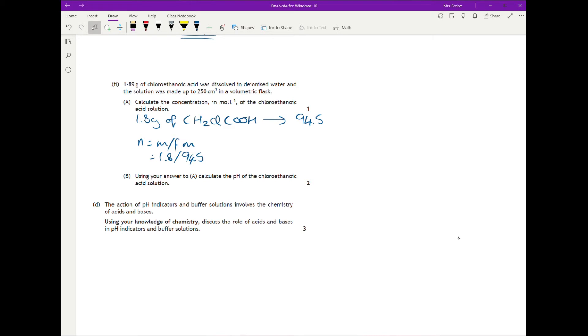So our moles is mass divided by formula mass. So 1.8 over 94.5. I'm just keeping that in my calculator, but feel free to write it down if you wish to here. And then you're going for concentration as moles over volume. So my moles I'm just taking from there, just keeping it in my calculator, and 0.08.